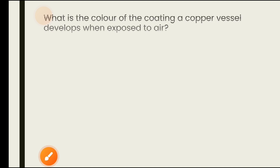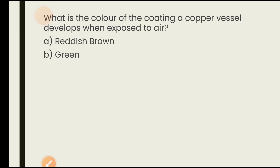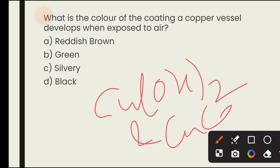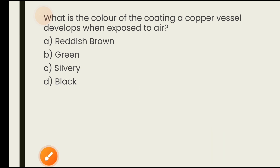What is the color of the coating a copper vessel develops when exposed to air? When a copper vessel is exposed to moist air for a long time, it acquires a dull green coating. The green material is a mixture of copper hydroxide and copper carbonate. The answer is option B — green.